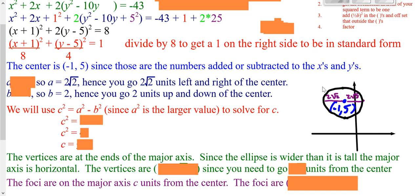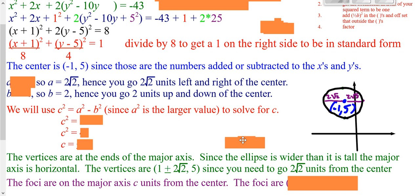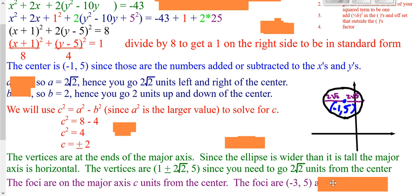To find your vertices, they're at the ends of the major axis. In this case the major axis goes left and right because you're going 2√2 left and right, which is more than 2 up and down. Since you're going left and right from your center, that only affects the x-coordinate. You were at x = −1 and went ±2√2, without changing your height. Your foci are c units left and right from center. The bigger squared minus the smaller squared: 8 − 4 = 4, so c = 2. Going right 2 from −1 gives (1, 5); going left 2 gives (−3, 5).